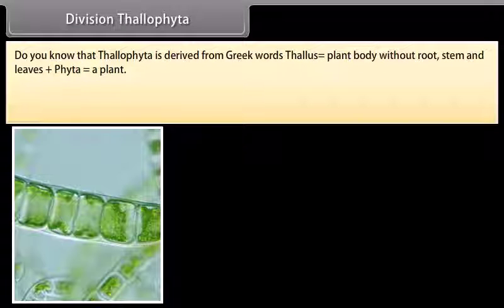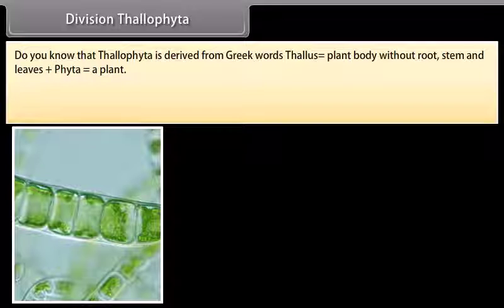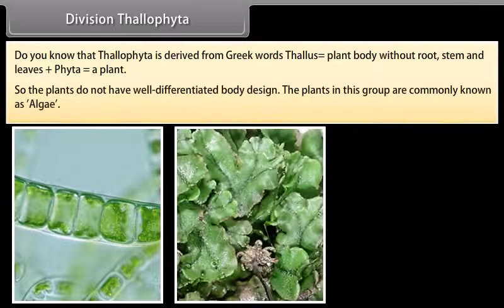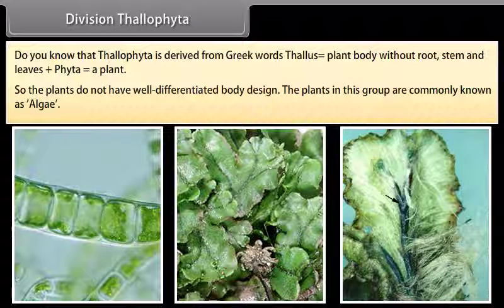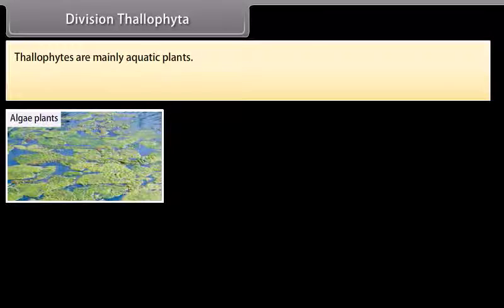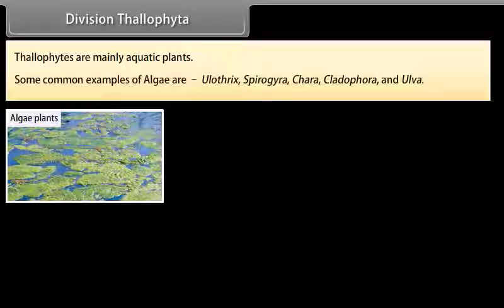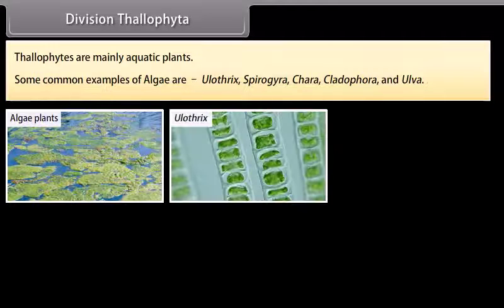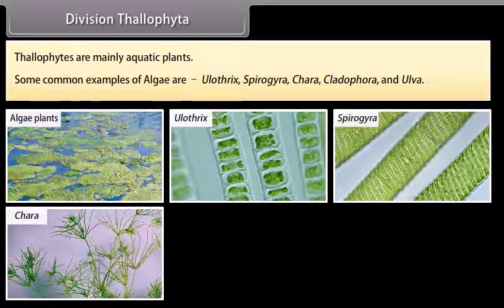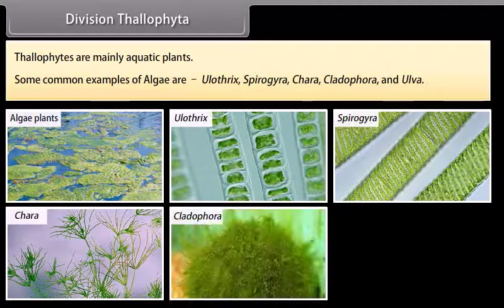Thallophyta is derived from Greek words: thalus, meaning plant body without root, stem, and leaves, plus phyta, meaning a plant. So these plants do not have a well-differentiated body design. The plants in this group are commonly known as algae. Thallophytes are mainly aquatic plants. Some common examples are Ulothrix, Spirogyra, Chara, Cladophora, and Ulva.